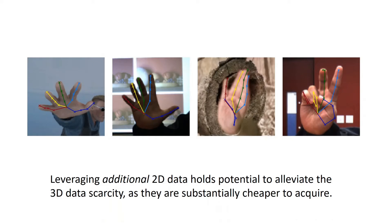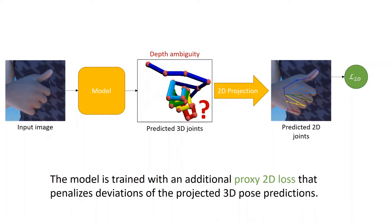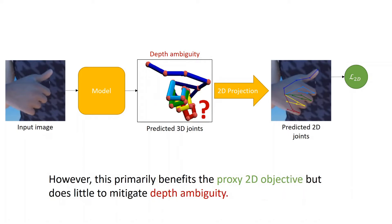Leveraging additional 2D data holds potential to alleviate the 3D data scarcity and is substantially cheaper to acquire. This is typically done by supplementing a fully supervised dataset with additional 2D annotated data. The model is trained with an additional proxy 2D loss that penalizes deviations of the projected 3D pose predictions. However, this primarily benefits the proxy 2D objective but does little to mitigate depth ambiguity.